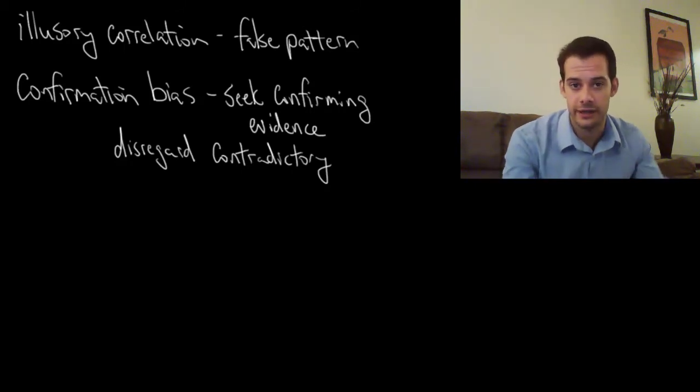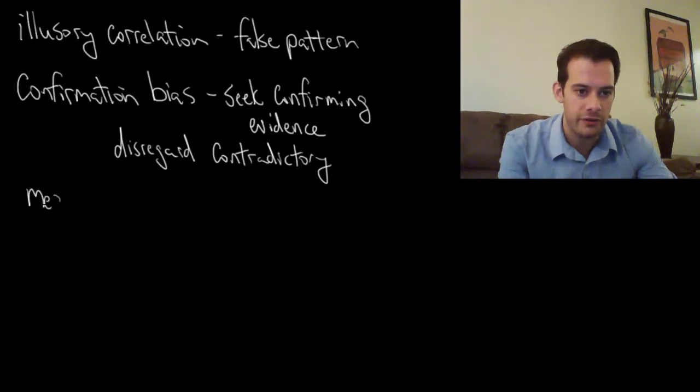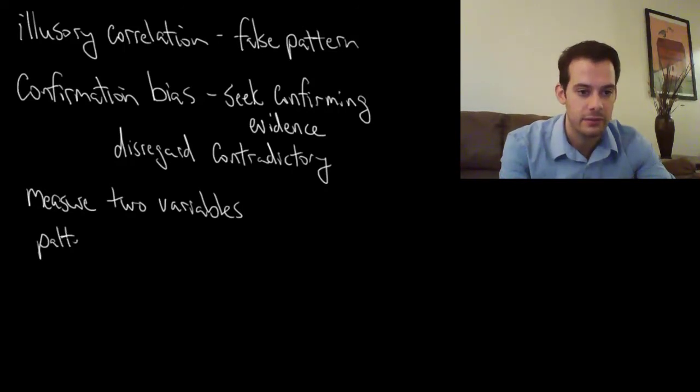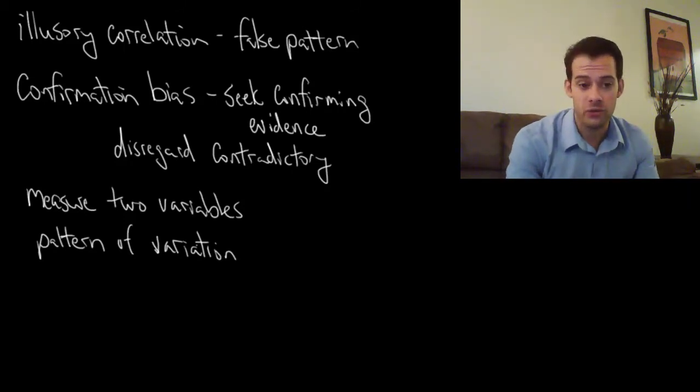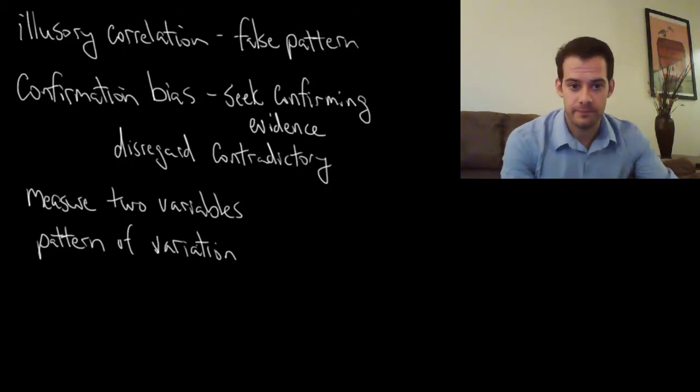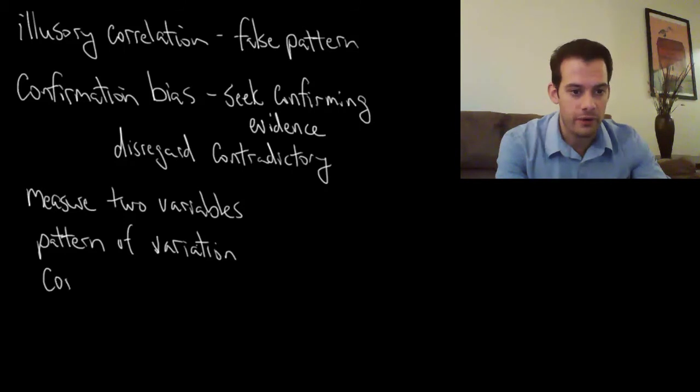To do that we do a correlational study. What we do is we measure our two variables and then we look for a pattern of variation. This is just saying that we look for a relationship between the variables. So as one variable changes does the other variable also change in some predictable way. That's a pattern of variation. We don't just want to know that there is a pattern, we also want to know the strength of this pattern. For that we need to calculate a correlational coefficient. And this is going to tell us the strength of the relationship.